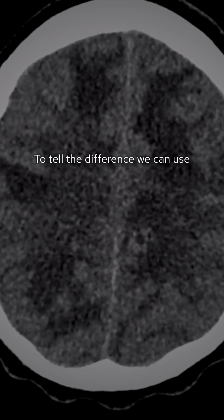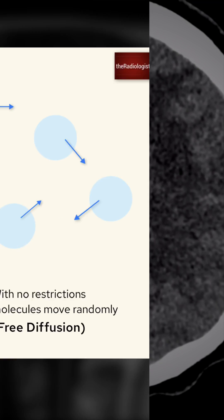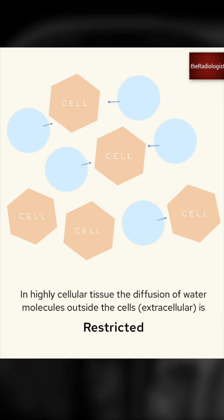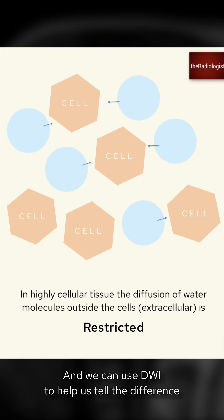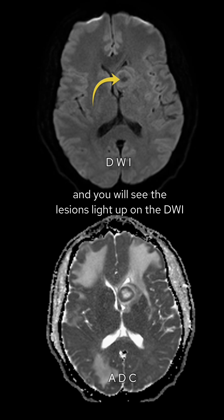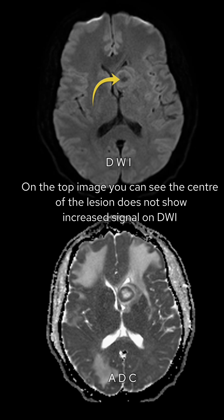To tell the difference we can use diffusion-weighted imaging. Here, with no restrictions, water molecules move randomly, known as free diffusion. In highly cellular tissue the diffusion of water molecules outside the cells is restricted and we can use DWI to help us tell the difference. With abscess formation, pus would restrict water molecules and you would see lesions light up on the DWI.